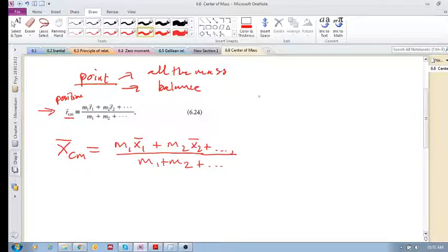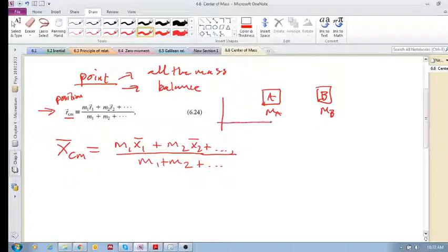Let's just do a simple example here. If you've got object A and object B, object A has mass mA and B has mass mB. And we choose some reference frame. So now the position of A is xA and the position of B is xB.